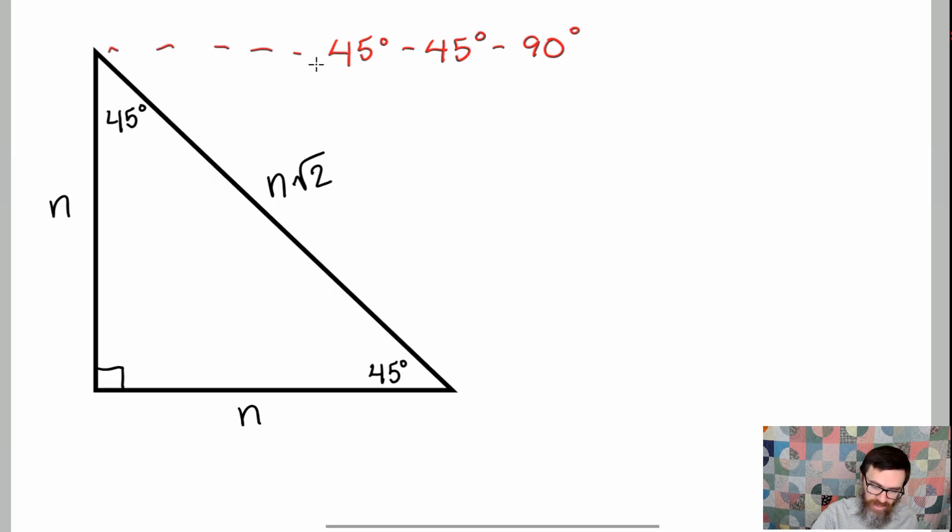You can kind of imagine that this is being extended out here and it's forming a huge square where each exterior side length is going to be n. If you apply the Pythagorean theorem you find out that the hypotenuse is going to be n times the square root of two.